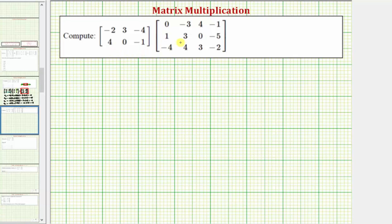We're asked to find the product of the two matrices. So the first step is to see if the product is possible. In order to multiply two matrices, the number of columns in the first matrix must be equal to the number of rows in the second matrix.